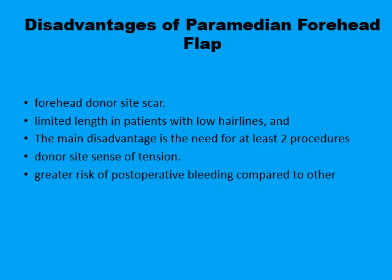The paramedian forehead flap remains one of the best surgical options for reconstruction of large nasal defects, but it is not without disadvantages — including the scar at the forehead donor area and limited flap length if there is a low hairline. The main disadvantage is that it requires at least two procedures, and often more, to divide the vascular pedicle and return it to its original position, and also to refine the shape of the reconstructed nose.